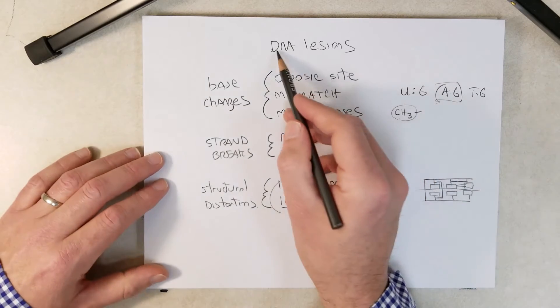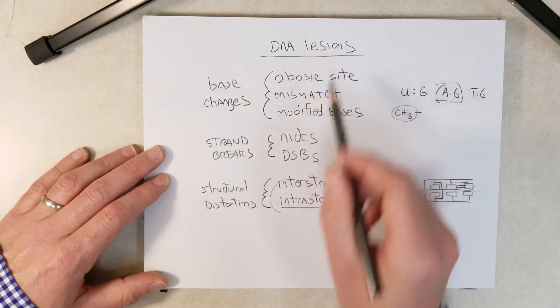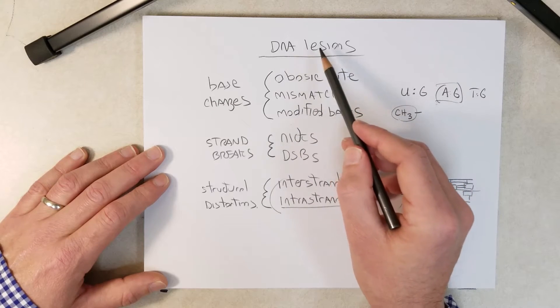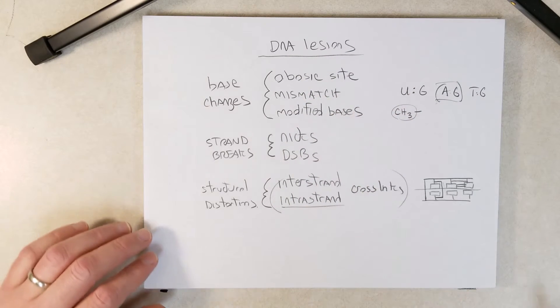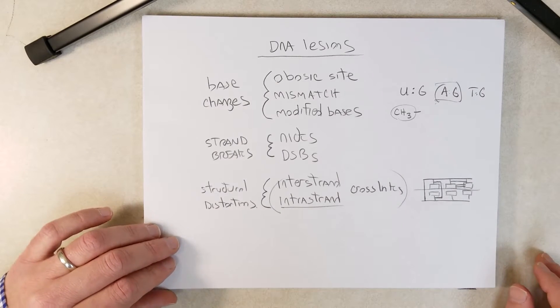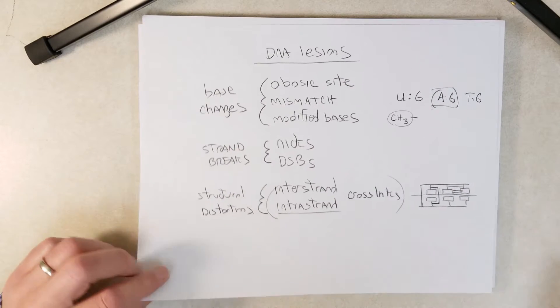So this is just an overview of DNA lesions. A DNA lesion is any change to the DNA that results in something that is not normal. In this video we are mostly going to focus on base changes.